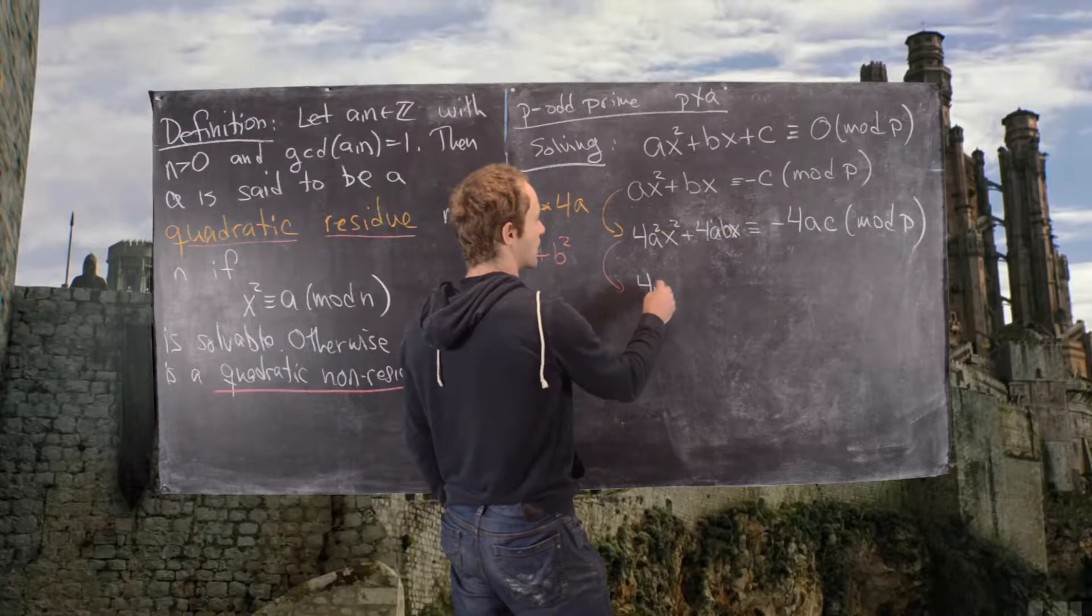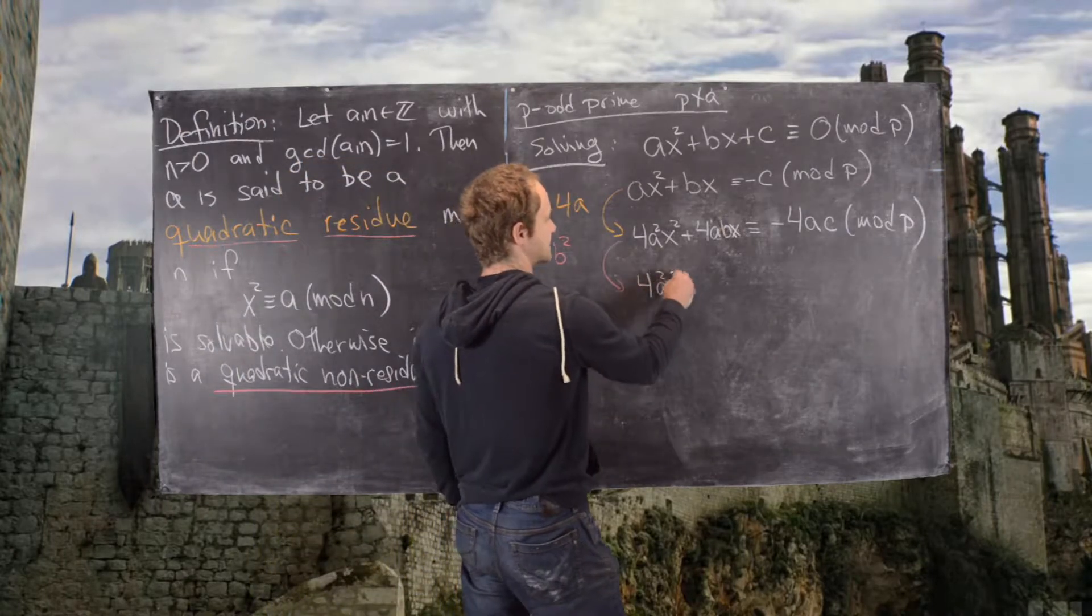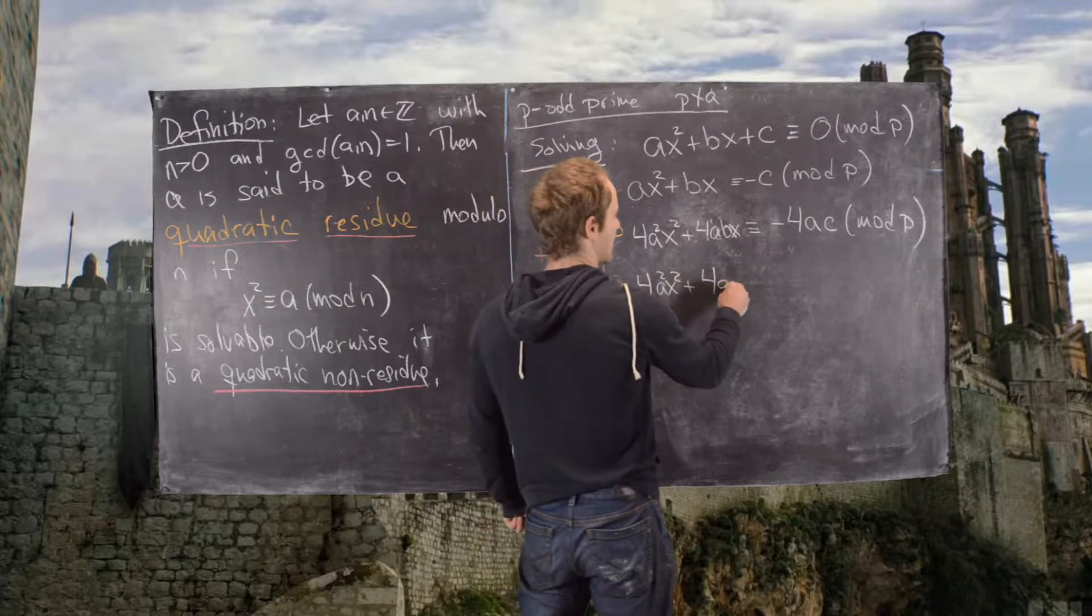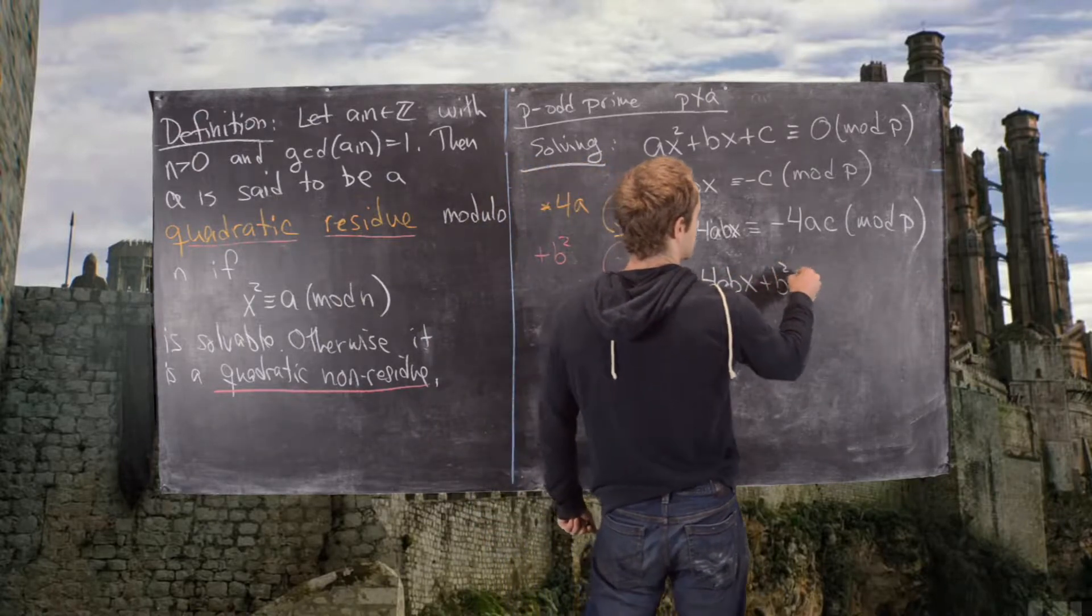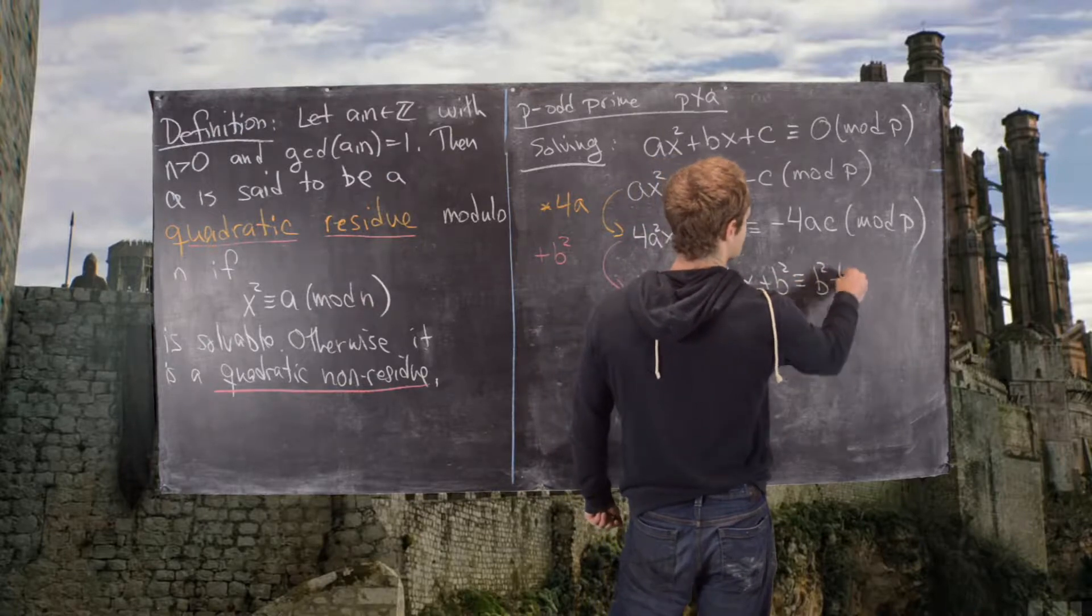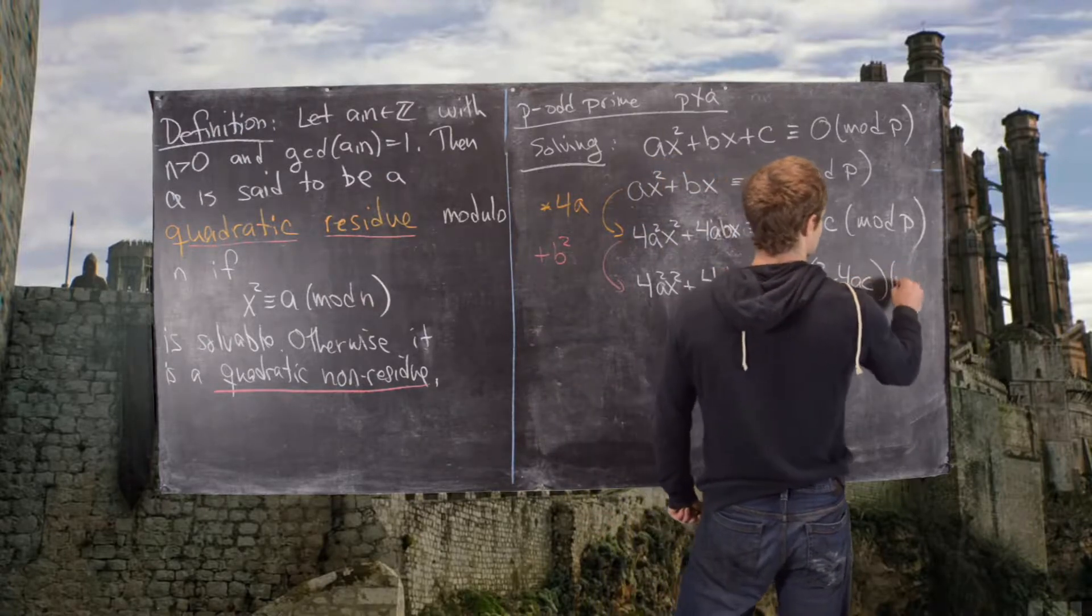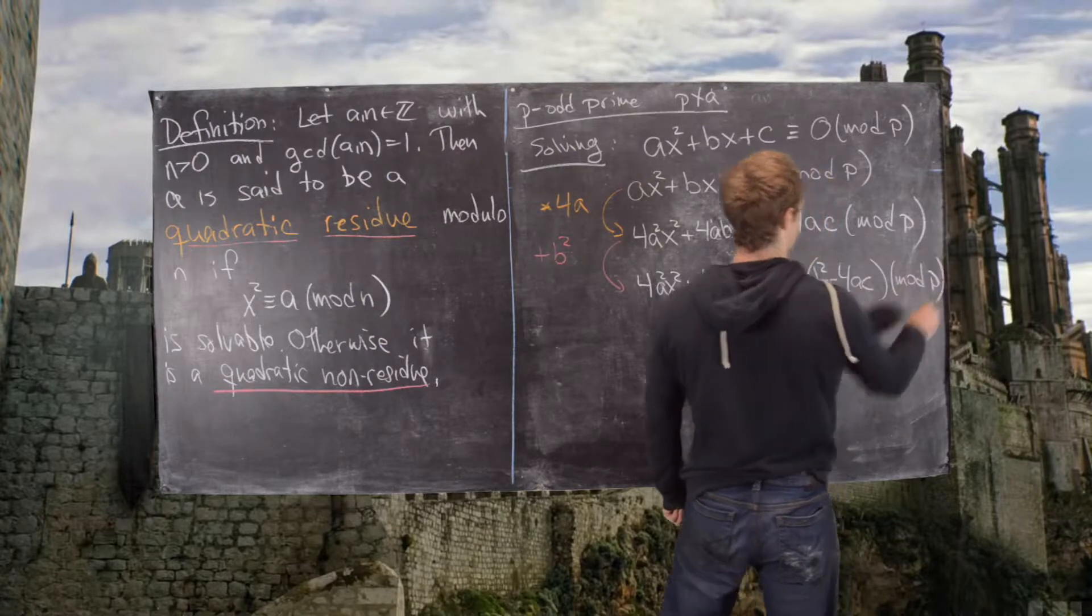And so that's going to give us 4a squared x squared plus 4abx plus b squared is congruent to b squared minus 4ac mod p.